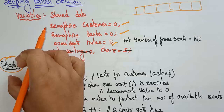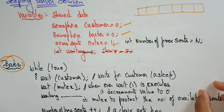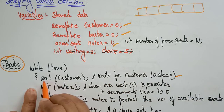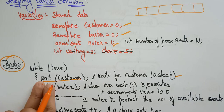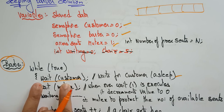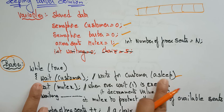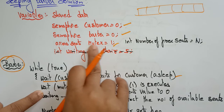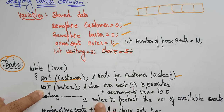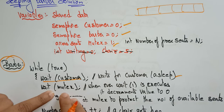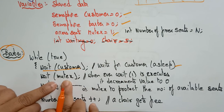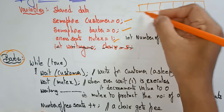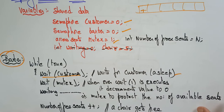I divide the program into the barber's view and the customer's view. In the barber's loop — while true — the barber executes wait(customers), which means he waits for a customer to arrive and sleeps until one comes. Then wait(access_seats) is called, which decrements the mutex to zero to protect the number of available seats. The number of free seats is then incremented because a person has entered the waiting room.